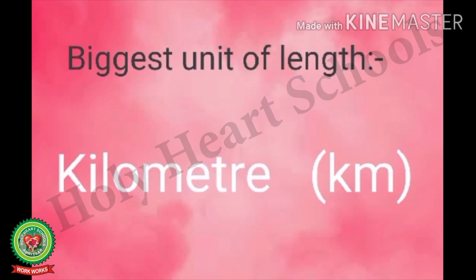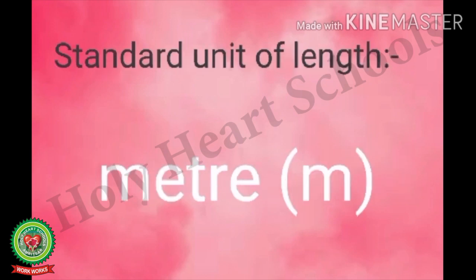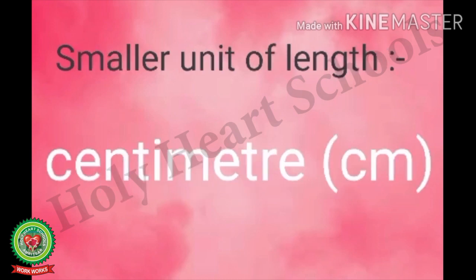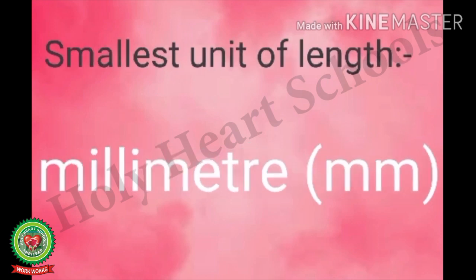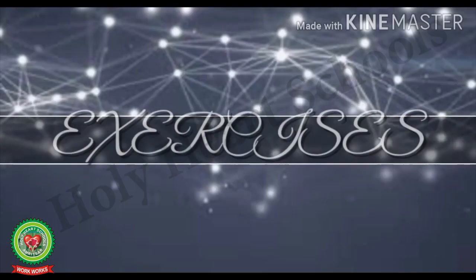Now let's learn more about length. We use standard units of length to measure objects. The biggest unit of length is kilometer, used to measure roads and railway tracks. The standard unit is meter, used to measure a short piece of dupatta or turban. The smaller unit is centimeter, used for small objects like handkerchief, pencil, or scale. The smallest unit is millimeter, used for very small objects like a sharpener or eraser.